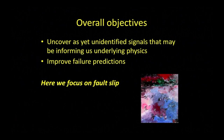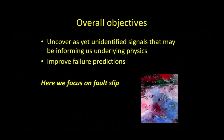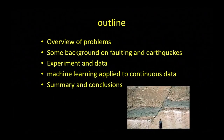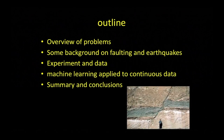Our overall objectives are to uncover as-yet-unidentified signals that may be informing us of underlying physics, and to improve failure projections along the way. We'll focus on fault slip, and I'll provide background on faulting and earthquakes for those in the mathematics and machine learning communities not familiar with this topic, then go to experimental work we're conducting and analyzing with machine learning, and summarize where we are today and where we're going.